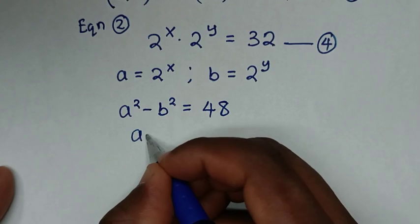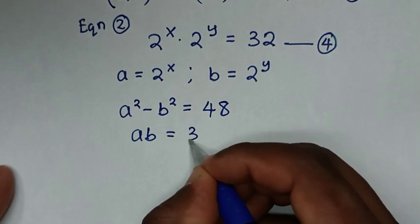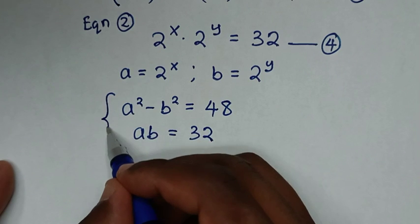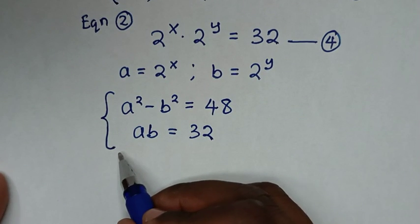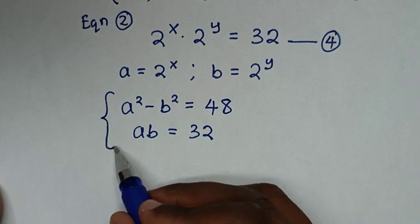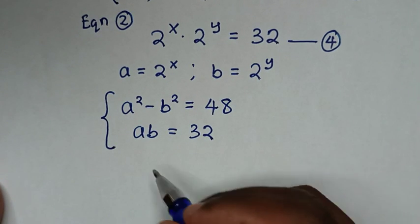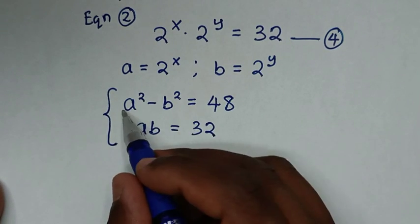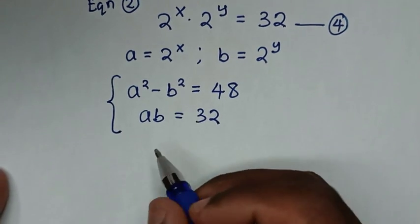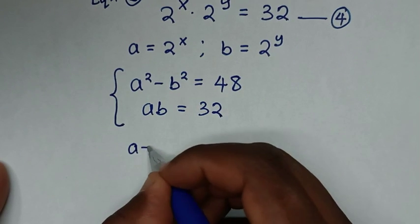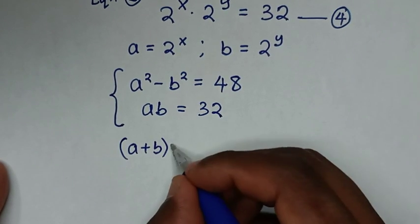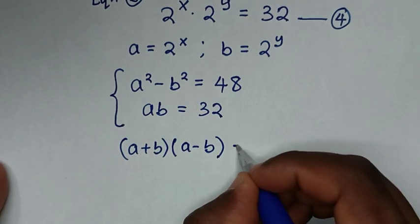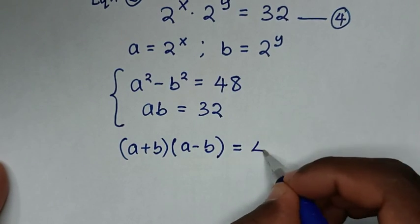So a times b equals 32. From these two equations we will find the values of a and b. From the first equation, a squared minus b squared is in the form of a difference of squares. So it factors as a plus b bracket times a minus b bracket equals 48.